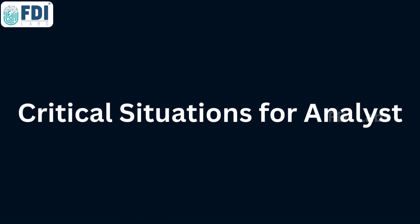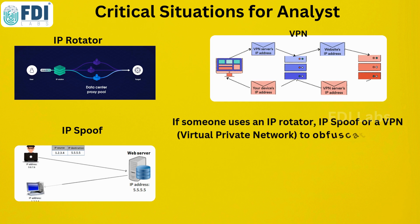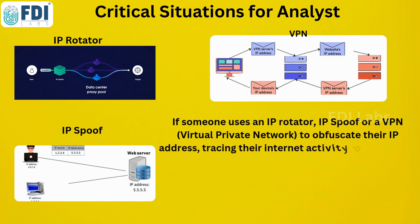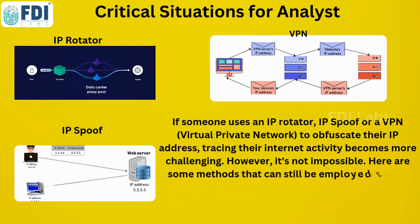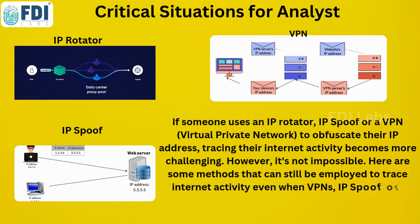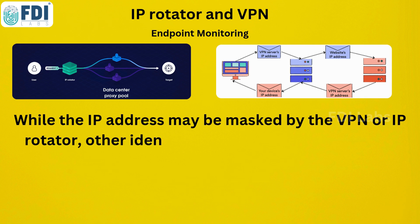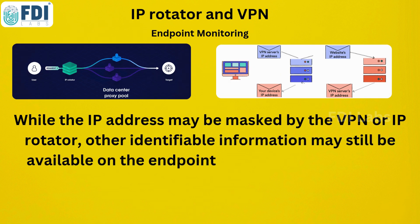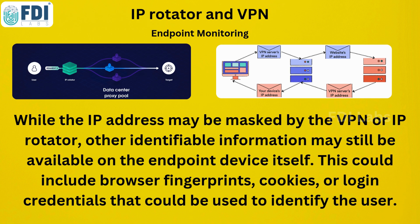It can become more difficult to figure out what people are doing online when they employ techniques like IP rotators, IP spoofing, or VPNs to mask their IP address. It's not impossible though — even if they are attempting to hide, there are still techniques to monitor their online activities. Identifiable data may remain on the endpoint device even if VPNs or IP rotators mask the IP address; cookies, browser fingerprints, or login information might still be present and provide identification hints.